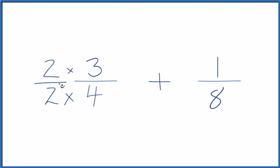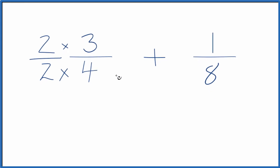That's because 2 over 2, that's just 1. We're multiplying 3/4 by 1, so we don't change the value, just the way it's represented.